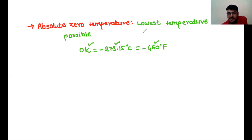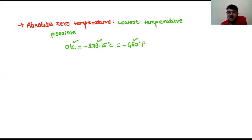On the Kelvin scale the lower fixed point is 273 Kelvin. On the Celsius scale the lower fixed point is zero degrees Celsius. On the Fahrenheit scale the lower fixed point is 32 degrees Fahrenheit — none of these is absolute zero. The lower fixed point and upper fixed point of the scales are simply the freezing and boiling points of water, whereas absolute zero is the lowest temperature possible.